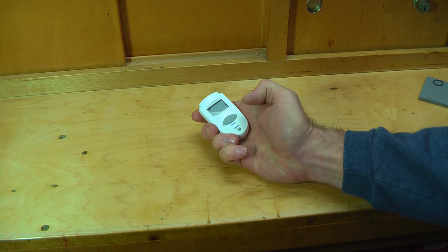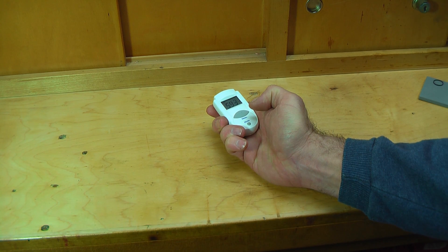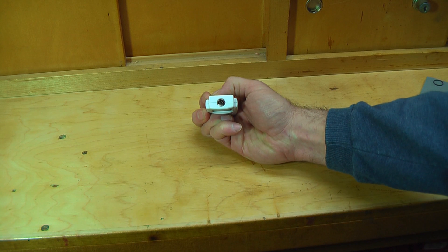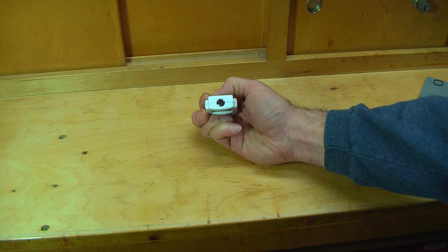It's real simple. Just push the button to turn it on. Point at the object. It just has a little eye right here in order to detect whatever temperature it is that your barrel's at.